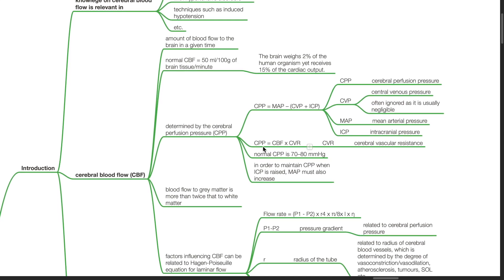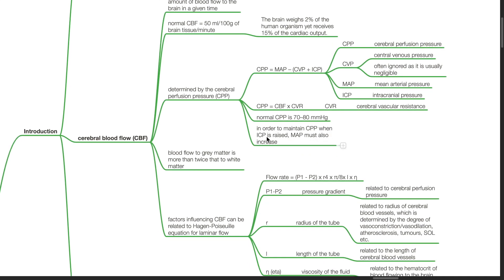Cerebral perfusion pressure can also be defined as CBF times CVR, where CVR is cerebrovascular resistance. Normal CPP is 70 to 80 mmHg. In order to maintain CPP when ICP is raised, MAP must also increase.